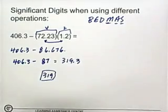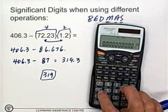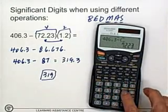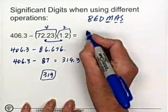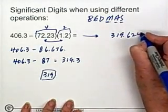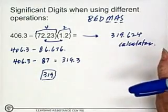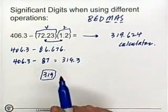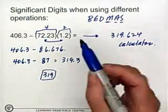But what happens in reality when we're working with questions in mathematics is we tend to just plug the numbers right into the calculator and go 406.3 minus bracket 72.23 times 1.2 bracket equals 319.624. So if we put this in the calculator, we're going to end up with 319.624. So there's nothing really wrong with doing that. But you need to be looking at this and thinking about what are my sig figs going to be in my final answer. And one of the things you should be doing when you're working through calculations is estimating.